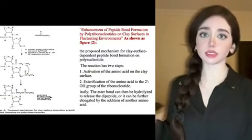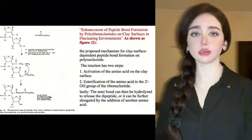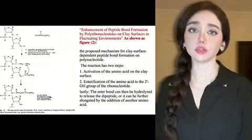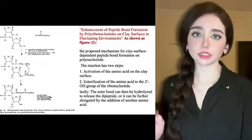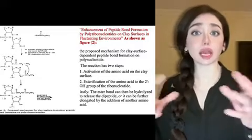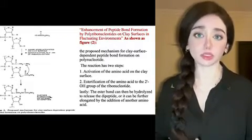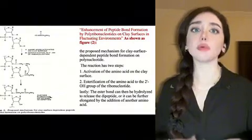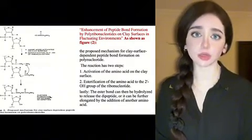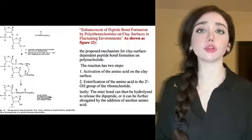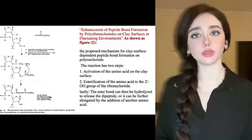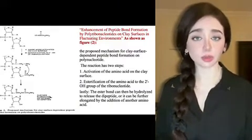As shown in Figure 2, this is a proposed mechanism for the clay surface dependent peptide bond formation on the polynucleotide. The reaction has two steps. First, the activation of the amino acid on the clay surface — it means the amino acid is deprotonated by a base on the clay surface, making the amino group nucleophilic. Second, the esterification of the amino acid and the 2-prime OH group of ribonucleotide — it means that the nucleophilic amino group attacks the carbonyl carbon of the ribonucleotide, forming an ester bond.